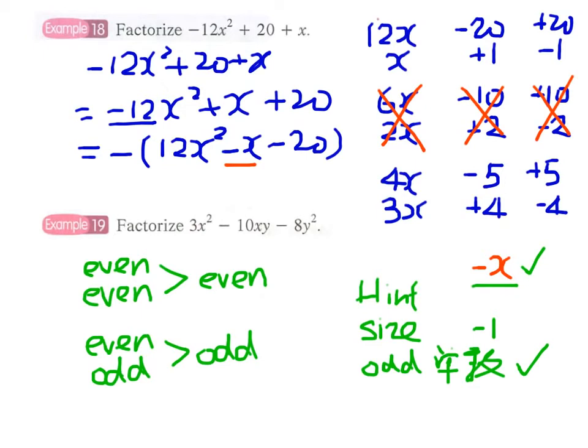Therefore, we can safely cross out 12x times x, and -20 plus 1—they are either too large or too small. And also +20 and -1. Now what's left behind?